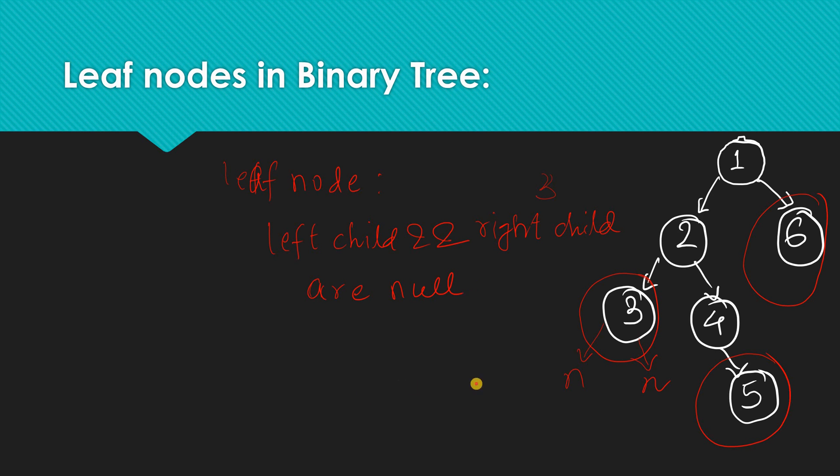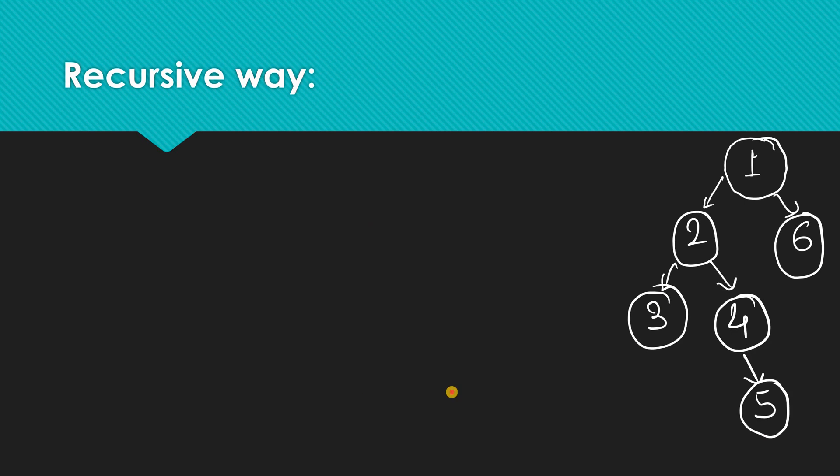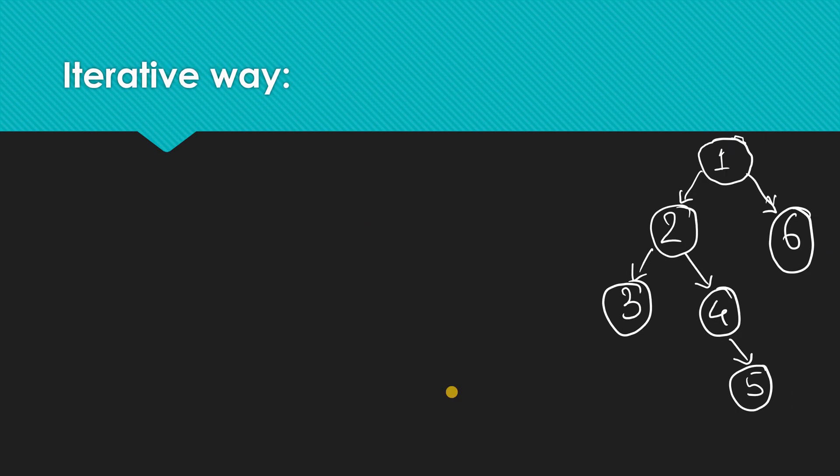Now let's see the approach by which we can find the number of leaf nodes in a binary tree. We will write this code in both ways — iterative and recursive.